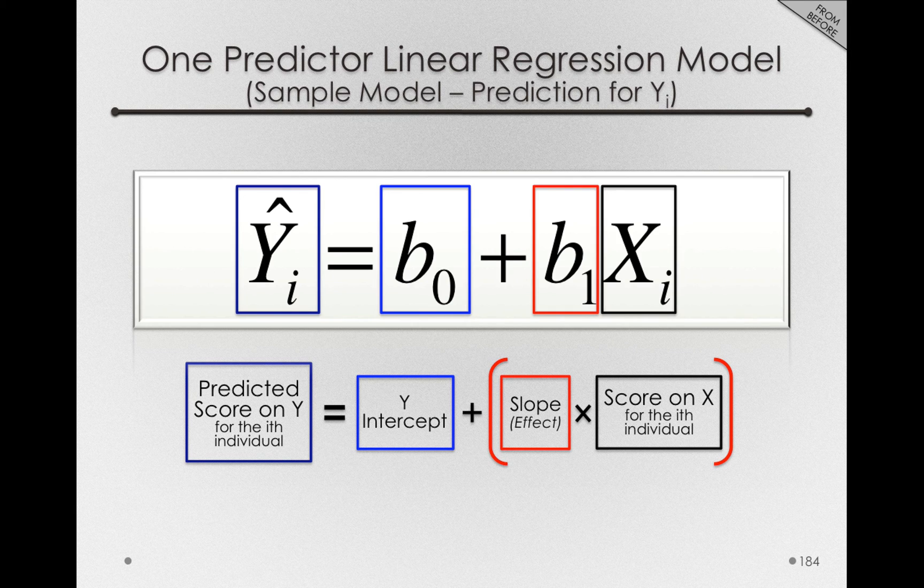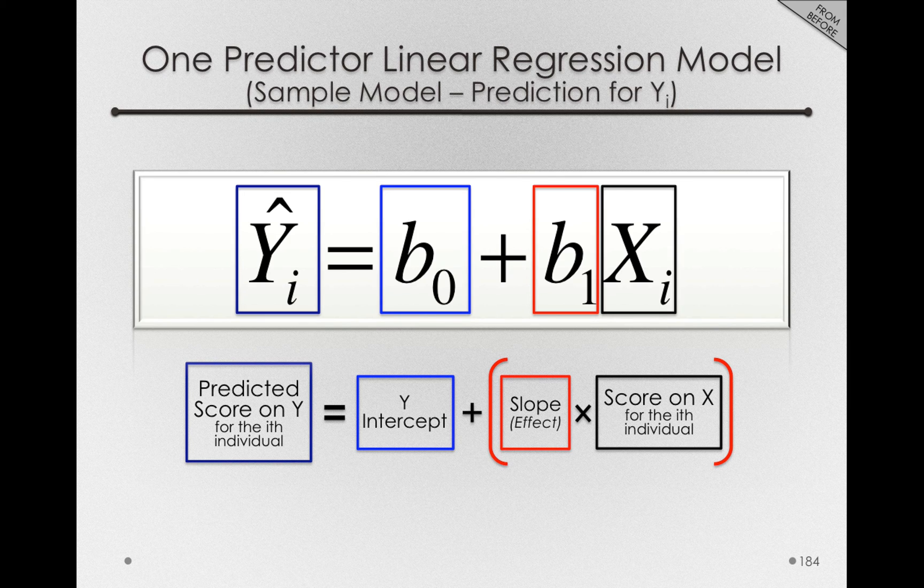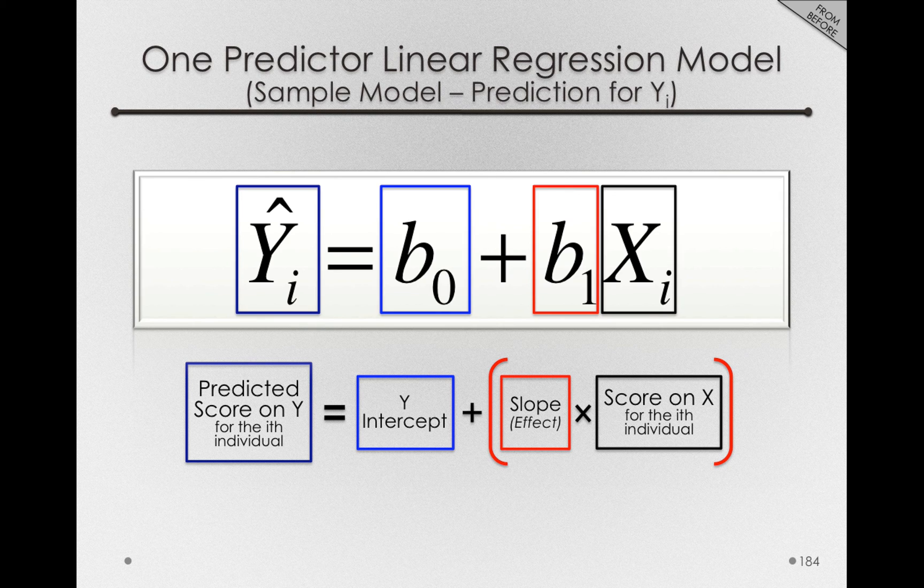So far, I've only shown you the sample version of this formula. Notice that this is our formula for the line in our sample. The predicted score for an individual is simply the intercept plus the slope times the score on x for that individual.